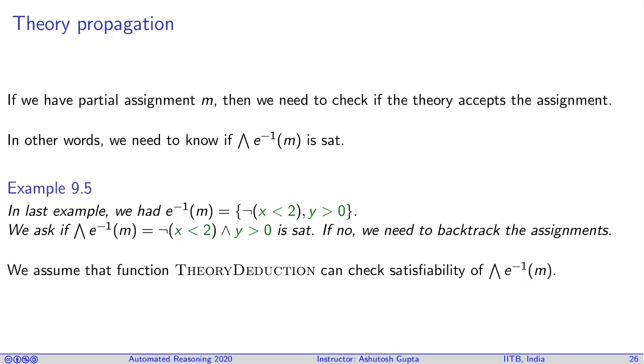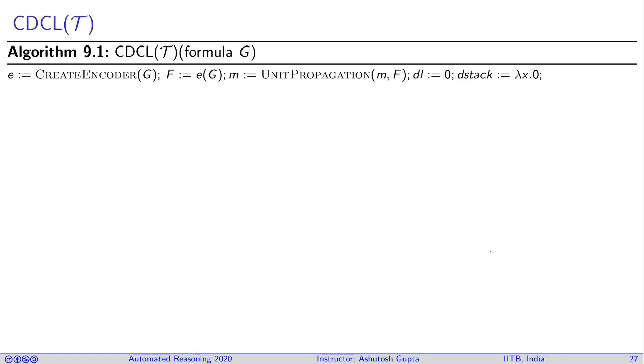We assume we have a function called theory deduction. What it does is take the conjunction of atoms or their negations and check if they are satisfiable or not. If we have such a function available, how are we going to implement CDCL(T)?